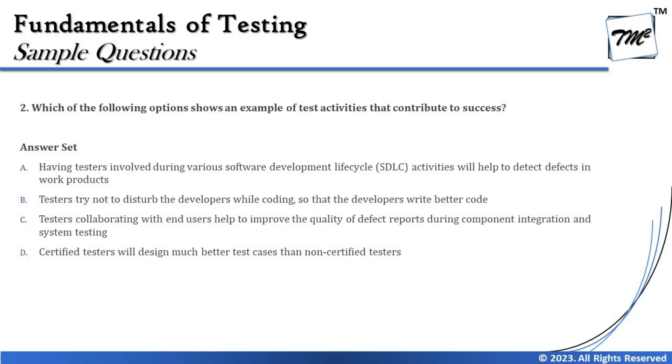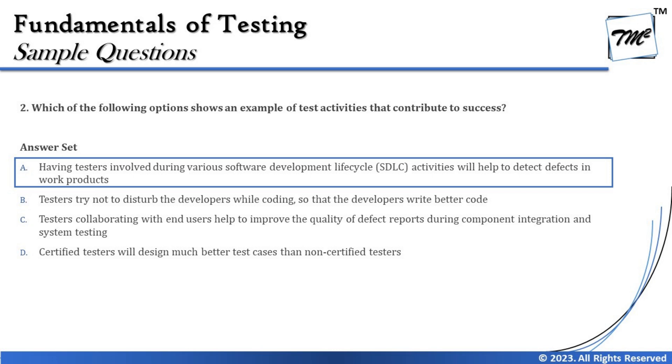Certification is just a recognition of what you do — it doesn't necessarily create a difference in the overall success of the project. Your experience, how you have been testing the product, and how well you know the product matter more than certification. So Option D is a distraction. The correct answer is Option A — having testers involved during various software development lifecycle activities will help to detect defects in work products.